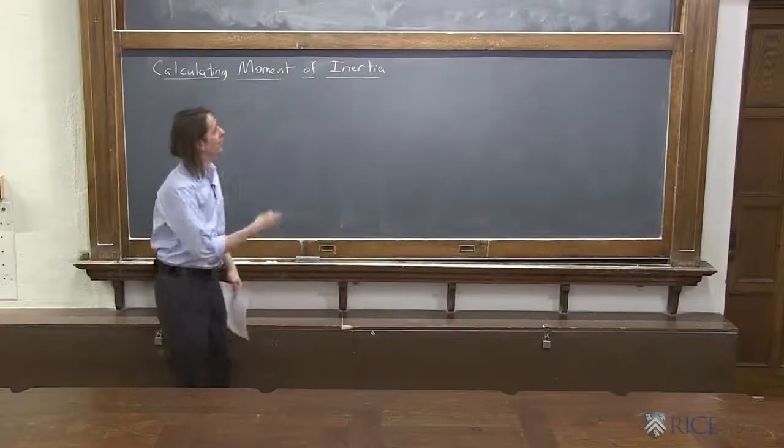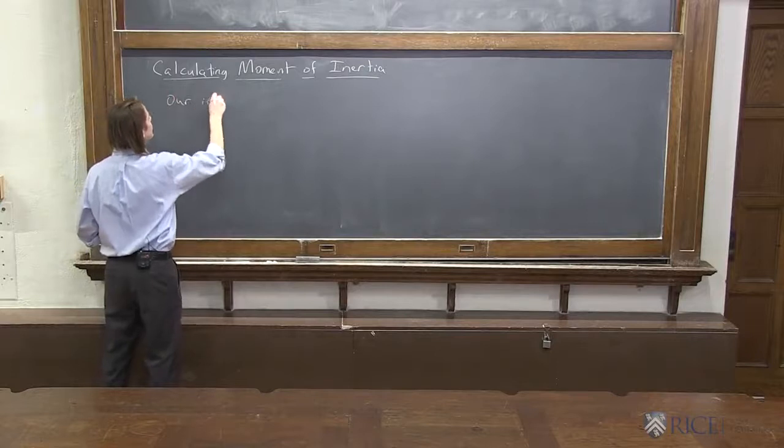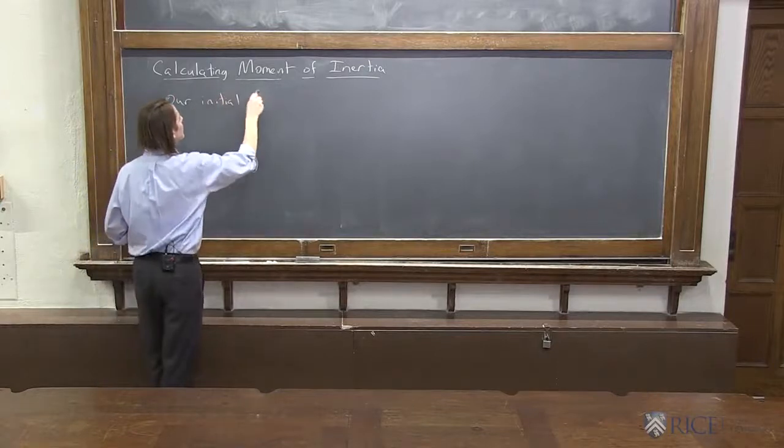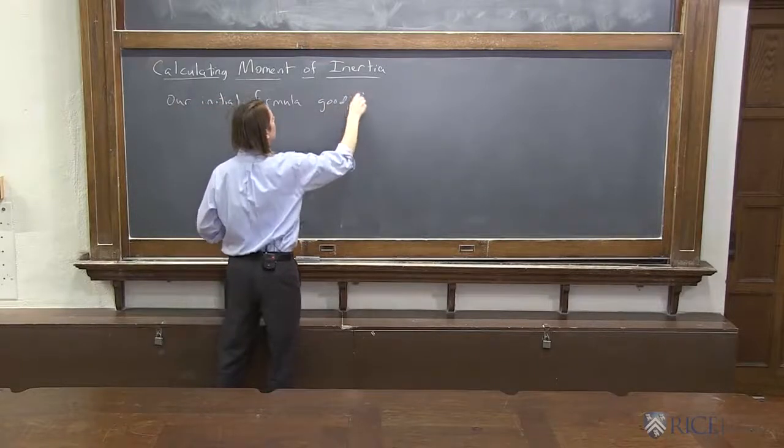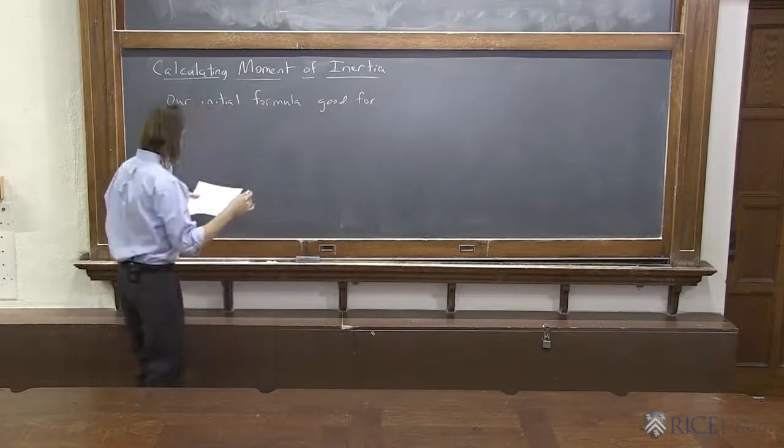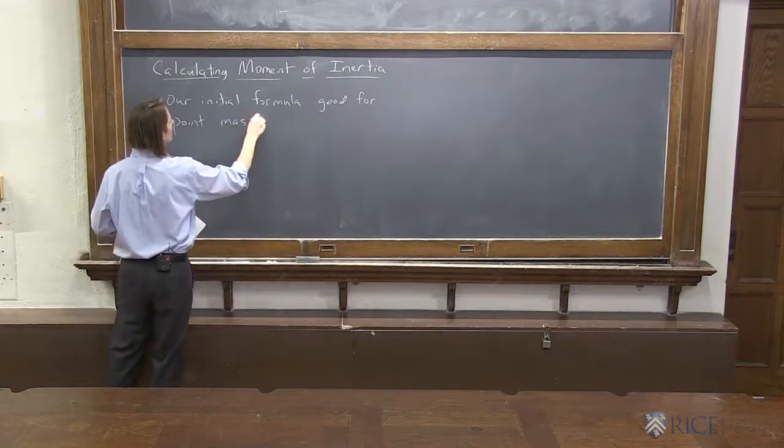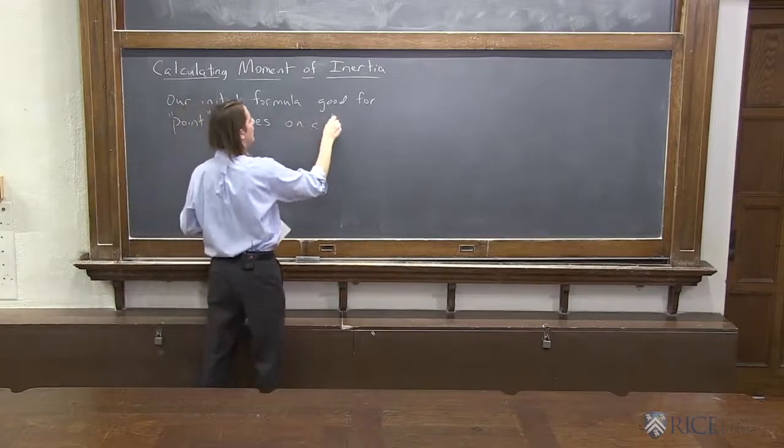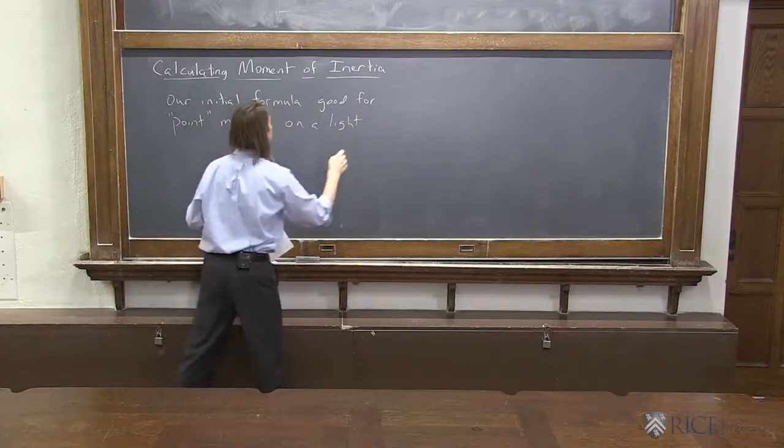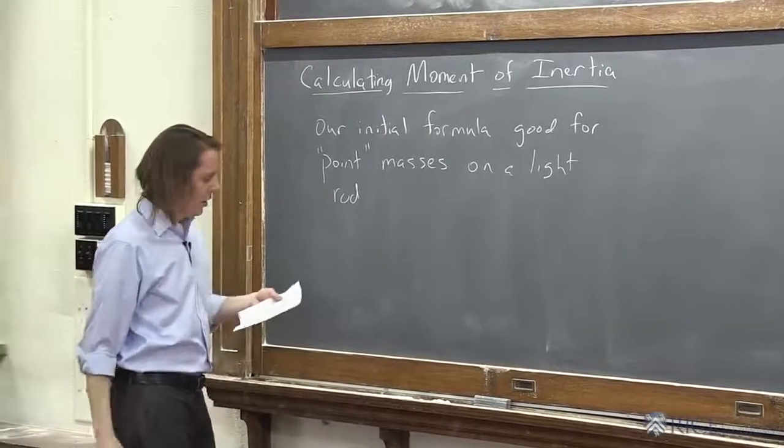Now let's look at ways that you calculate the moment of inertia. So our initial formula is actually useful. It's good for point masses or masses that you can treat as point masses on a light rod if we're working in one dimension.